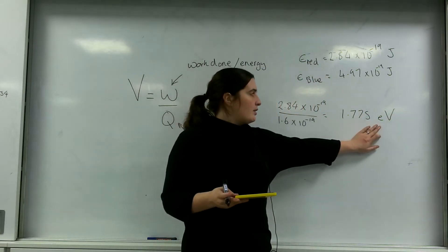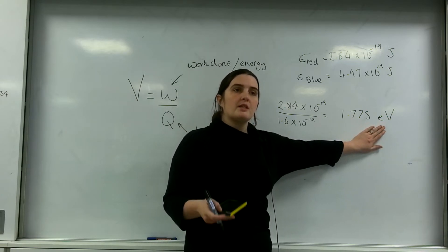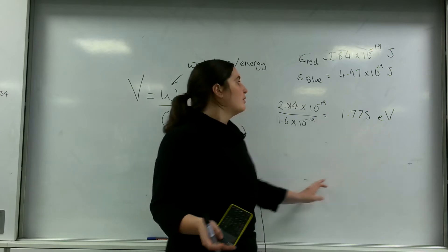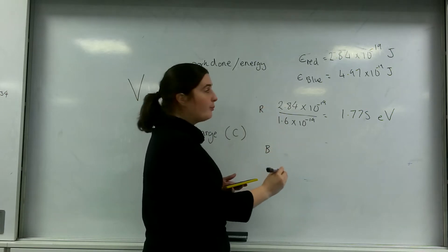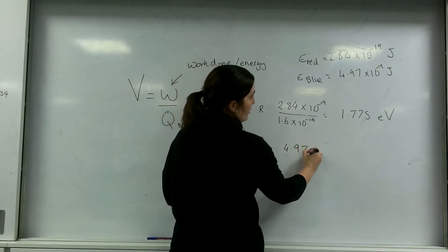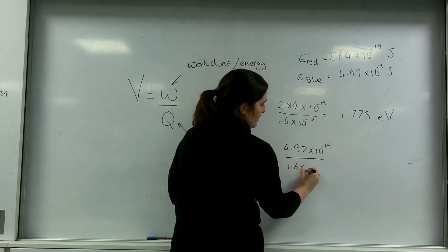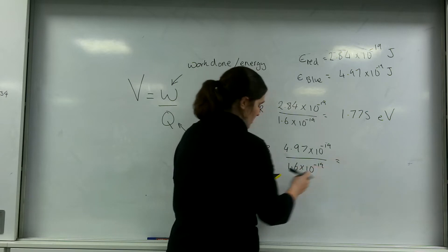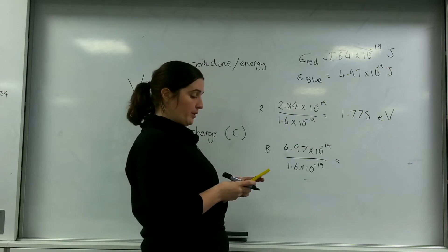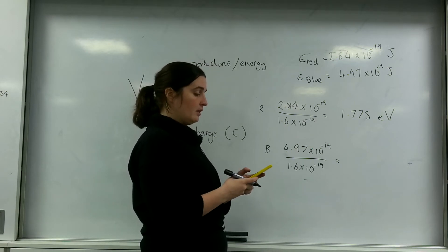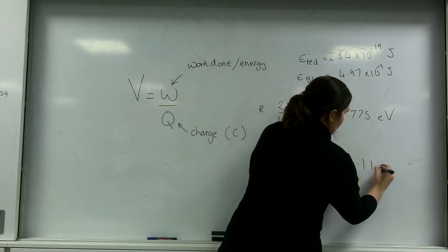The reason I write eV is to indicate that it's the energy that an electron would carry. For the blue light: 4.97 times 10 to the minus 19 over 1.6 times 10 to the minus 19 equals 3.11 electron volts.